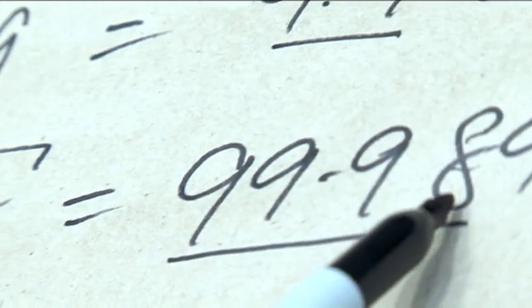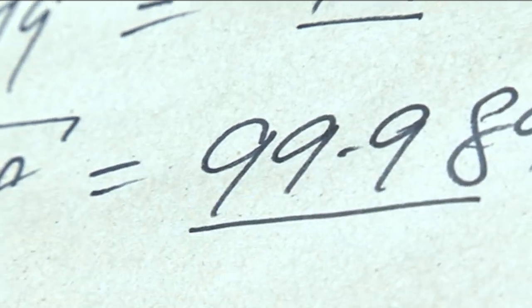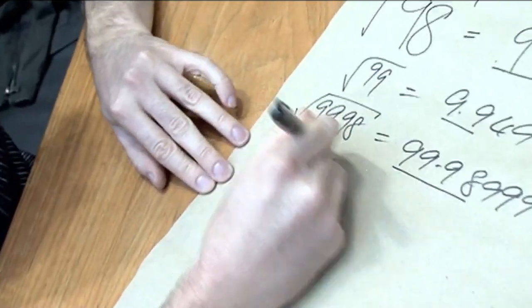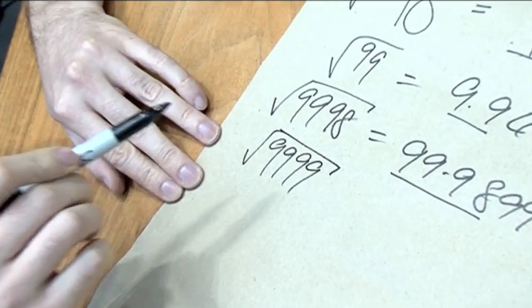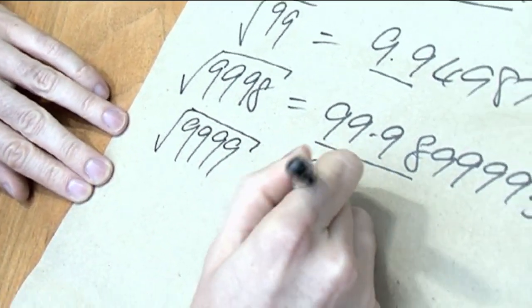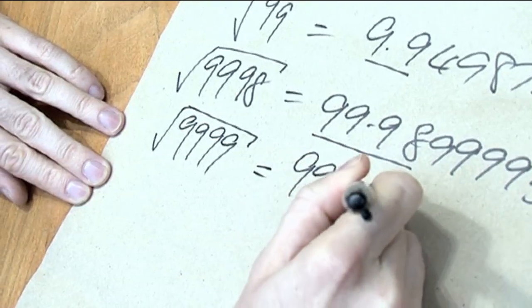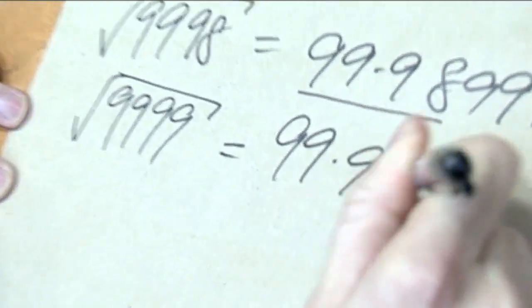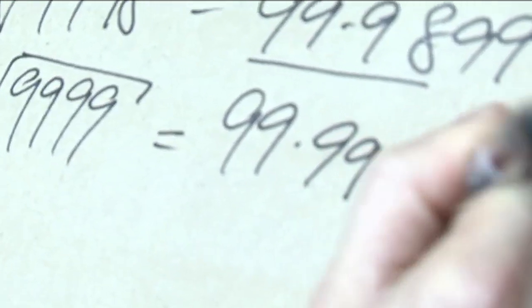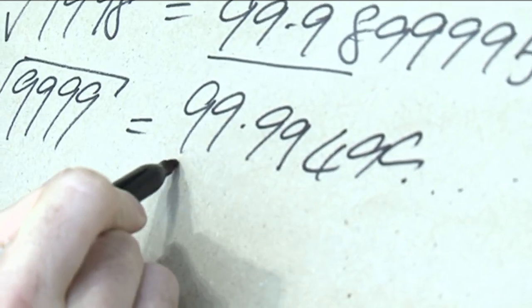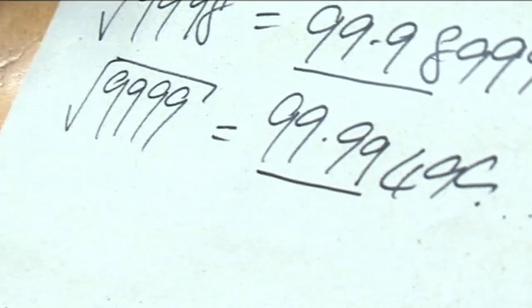And there's your 9998. And all these numbers — you can keep going. 9,999: if you square root 9,999, it starts 99.9999, then 49, and there's other stuff after that. But it starts with those digits, and this continues.